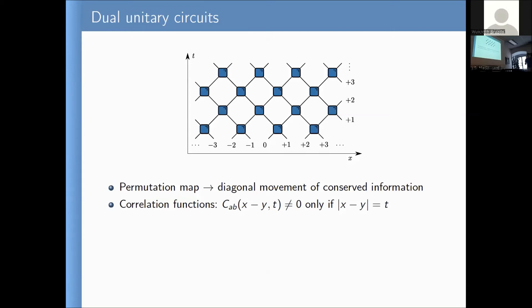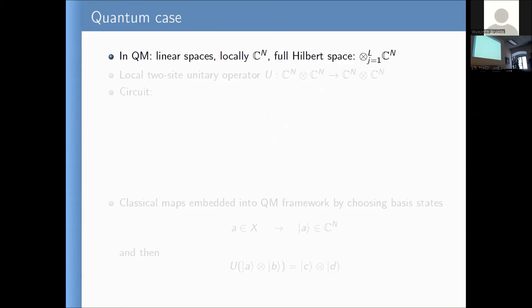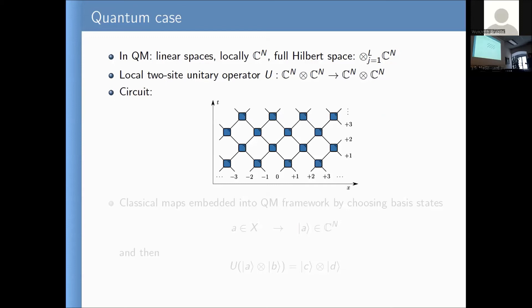Now let us go to the quantum case. This whole framework was actually invented for the quantum case. In quantum mechanics we have local complex spaces C^n, and we take tensor products of these spaces of length L — a spin chain or quantum cellular automaton. Instead of the local function u, which takes two variables and gives two variables, in the quantum case it is a linear operator acting on the double tensor product of C^n. The circuit is the same — I can draw the same picture — but now each blue box is a linear operator.